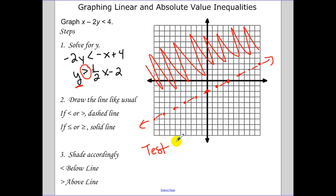So I've tested 0, 0. I plug in 0 for y, 0 for x, and 0 is greater than negative 2. That is a true statement, so I've shaded the correct region.